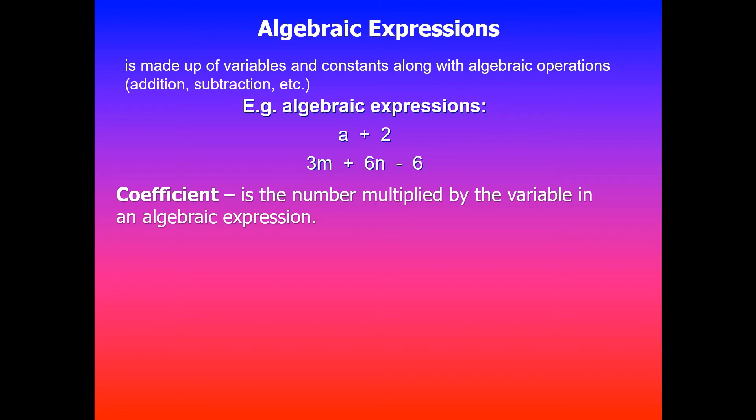Coefficient is the number that is in front of a variable and that number is multiplied by that variable. For example, 6m plus 5 where 6 is the coefficient of variable m. 8r plus 7m plus 4, the coefficient of r is 8 and the coefficient of m is 7. The coefficient of b is 14.